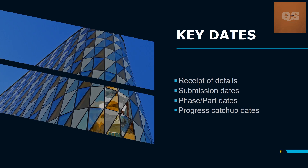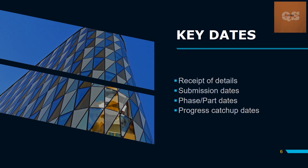Key dates include: when documents were received from the client or consultant — all drawings, reports, and specifications; the submission or deliverable date, which determines how resources should be allocated; phase or part dates, where different buildings or phases have separate submission deadlines; and the progress catch-up date, which could be a daily or weekly check-in scheduled by the client or consultant. Team members must be clear about all these dates.